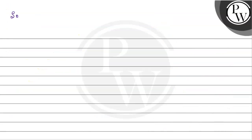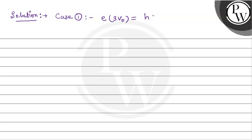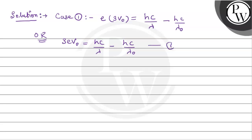So let's look at the solution. In the solution we have two cases to deal with. First we will deal with case number one. When the stopping potential given is 3V₀, then: E × 3V₀ equals hc/λ minus hc/λ₀. The threshold frequency won't change, so lambda₀ also won't change. So we write: 3eV₀ = hc/λ − hc/λ₀. This is equation number one.